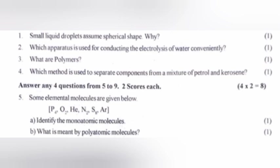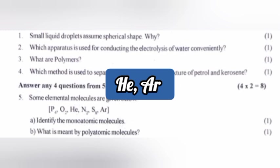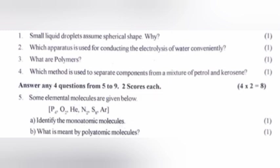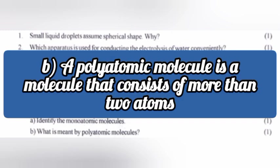Some elemental molecules are given. A: Identify the monoatomic molecule. Answer: Helium and argon. B: What is meant by polyatomic molecule? Answer: A polyatomic molecule is a molecule that consists of more than two atoms.